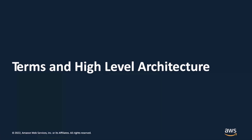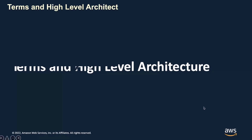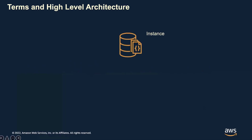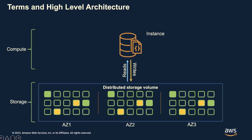Let's get into a high-level architecture and go through some of the terminology I'll be using throughout this presentation. Starting with an instance: a DocumentDB instance is a compute unit that provides the processing power for the database — it's what you interact with and connect against to run your queries. This instance interacts with the cluster volume, which is the storage layer.